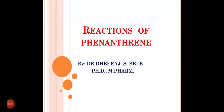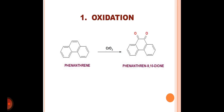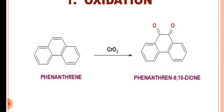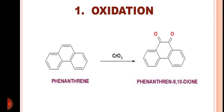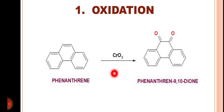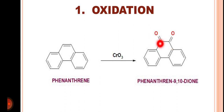Hello dear students. Today's topic is reactions of phenanthrene. The first reaction of phenanthrene is the oxidation reaction. When phenanthrene reacts with an oxidizing agent like chromium trioxide, we get the formation of phenanthrene-9,10-dione.